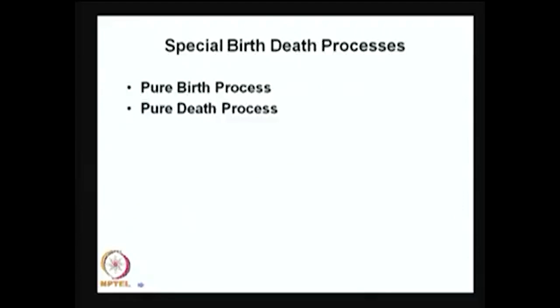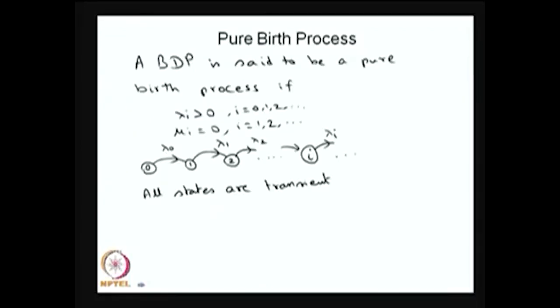As a special case of the birth-death process, I will discuss two processes in this lecture. A pure birth process has all death rates equal to 0 — we start with the birth-death process where only lambda_i's are greater than 0 and mu_i's are 0. A special case of the pure birth process with constant lambda_i equal to lambda is the Poisson process, which will be discussed in the next lecture. In the pure birth process, lambda_i's are functions of i, and all states are transient.